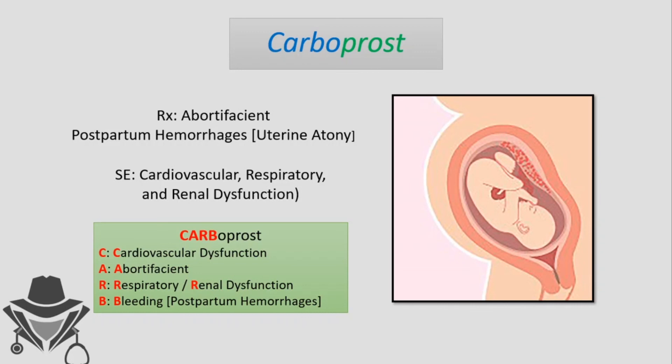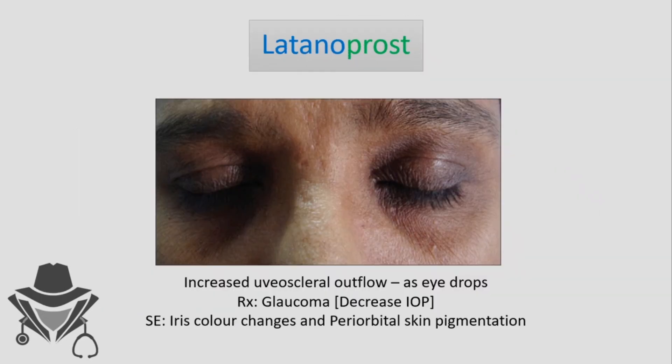Latanoprost is used for the treatment of glaucoma. It works via an alternative pathway called the uveoscleral pathway, which is responsible for 20% of aqueous drainage from the eyes. Side effects include iris color changes and periorbital skin pigmentation, as seen in the picture shown.